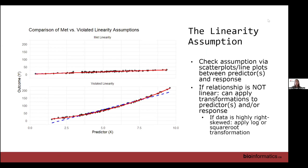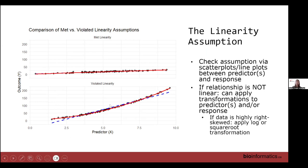Taking a closer look at the linearity assumption: the top plot shows a linear relationship between predictor x and outcome y, whereas the bottom plot shows what looks like a curved relationship. If you saw something like that when plotting x versus y before fitting your model, you might add a polynomial term such as x-squared to see if that improves your model fit.